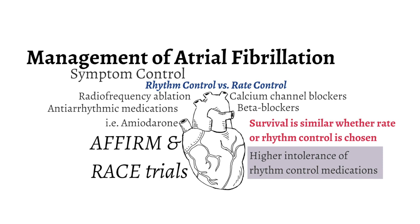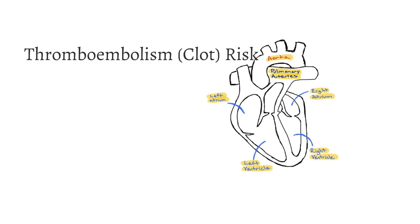Typically, rate control is chosen for AFib patients without symptoms, and rhythm control for those with significant symptoms. Currently, there are many more therapeutic options for rhythm control beyond medications. Regardless of which strategy is chosen, the risk of clot formation is the greatest contributor to mortality and morbidity. Since the atria do not effectively contract, blood does not move well and tends to clot. Clots from the right atrium can lead to pulmonary emboli, and clots from the left atrium can travel and cause strokes.